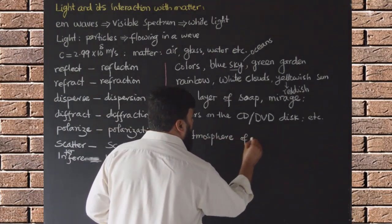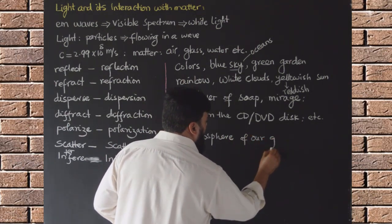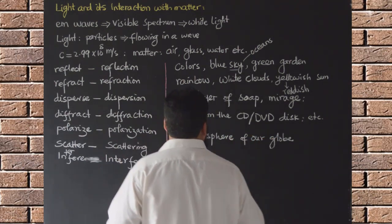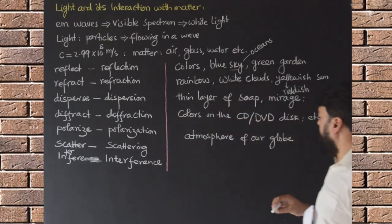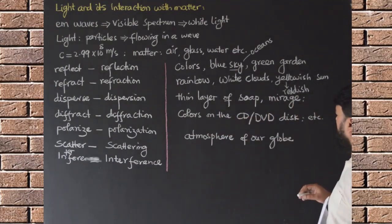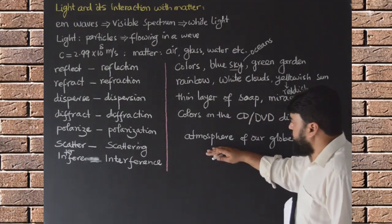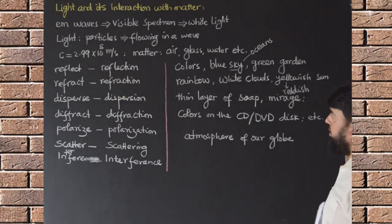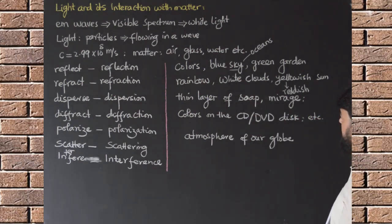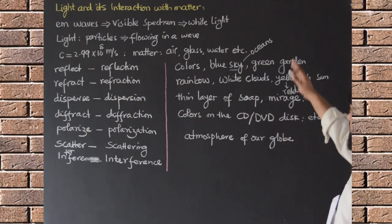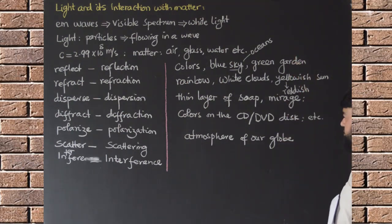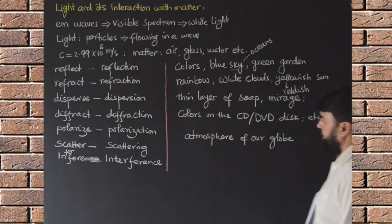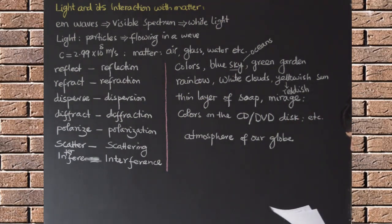All these colors we observe in daily life are actually the interaction of light with matter. Whatever colors we see on the globe and in the skies are actually due to the atmosphere of our globe. If we had no atmosphere, we would not be able to see these different phenomena of color appearance.